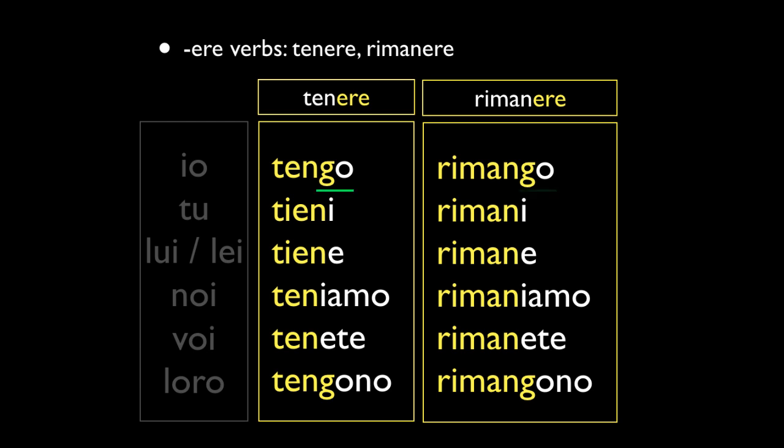So again, that -go form gets added in the io form, and tengono/rimangono in the loro form — the io and loro forms are kind of connected in that stem. There's also a slight orthographic change in the tenere stem with the adding of an I, which rimanere does not have. That's what to look out for there.